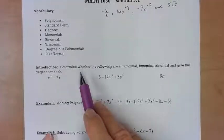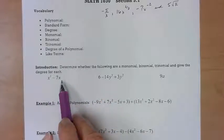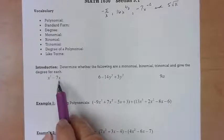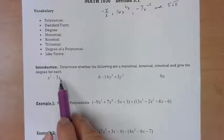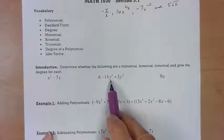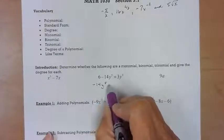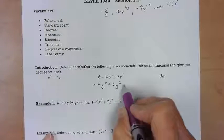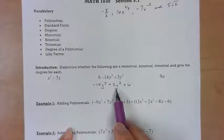Now in this one it says determine whether the following are a monomial, binomial, trinomial and give the degree for each. Well, this one I see two terms - that is a binomial, like bicycle. The degree of the polynomial is three. Now the degree of this term is one, so the largest is three. This one is not in standard form, so I'm going to write it in standard form. Most math books automatically put their answers in standard form, but that doesn't mean they have to give you the problems in that form.